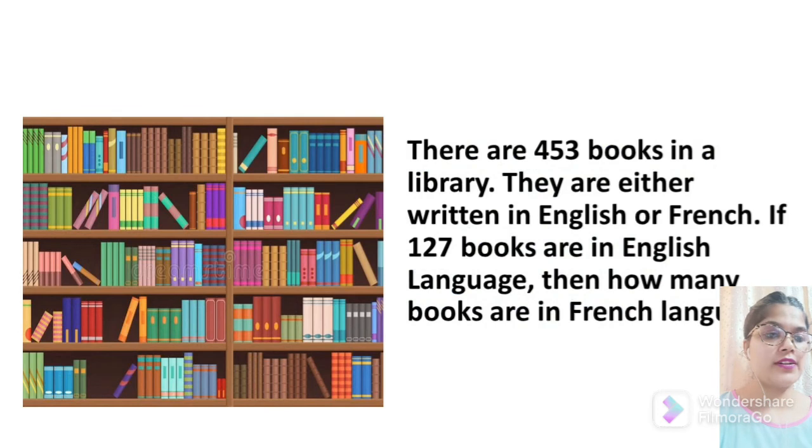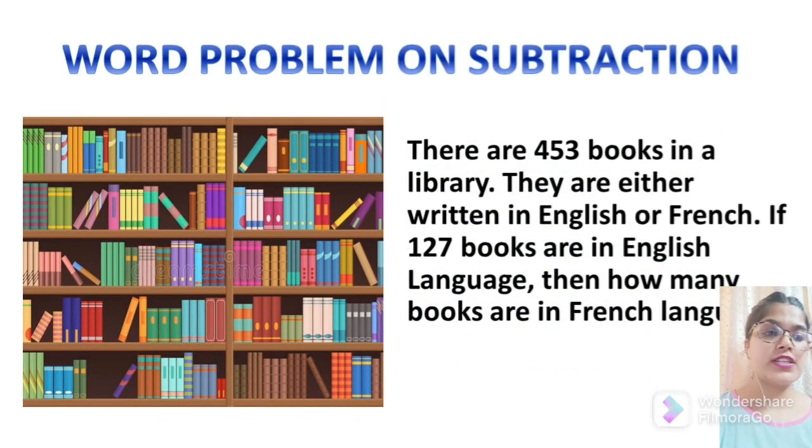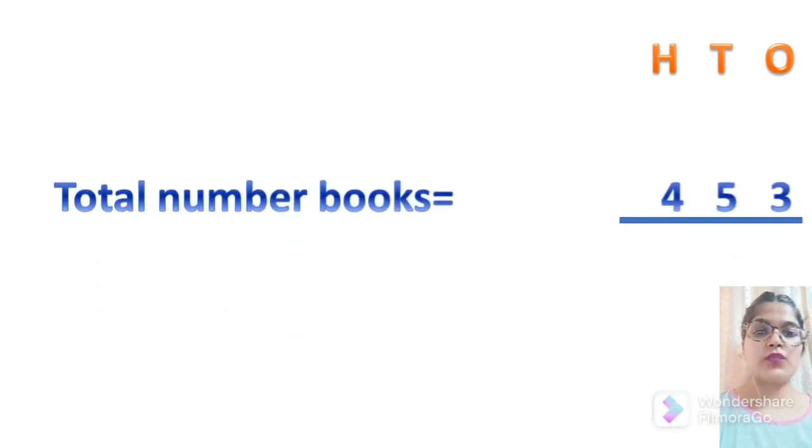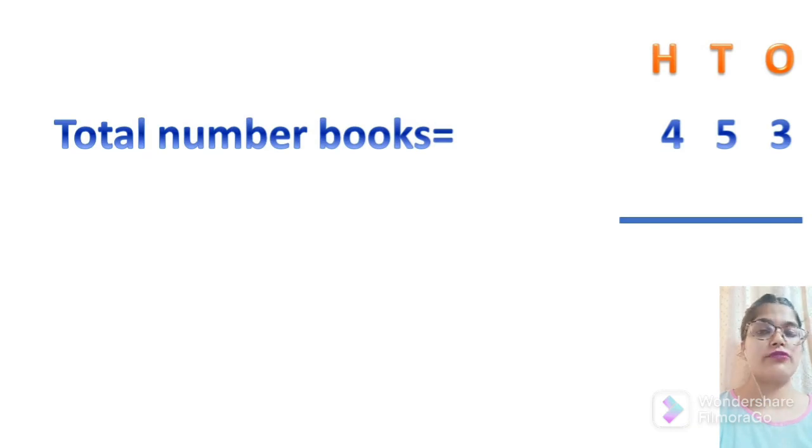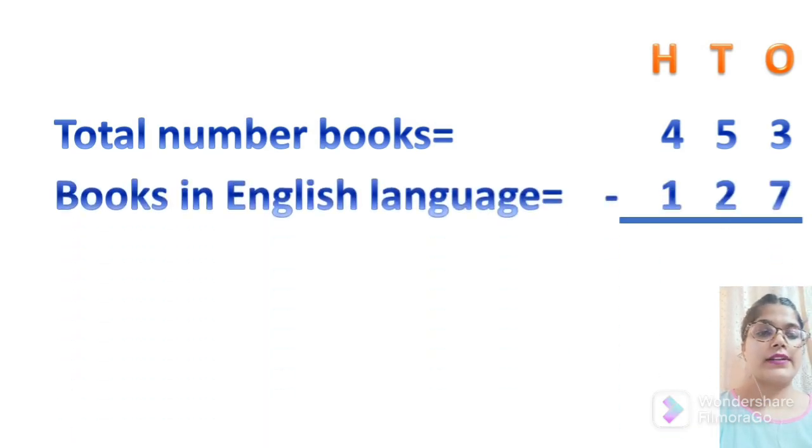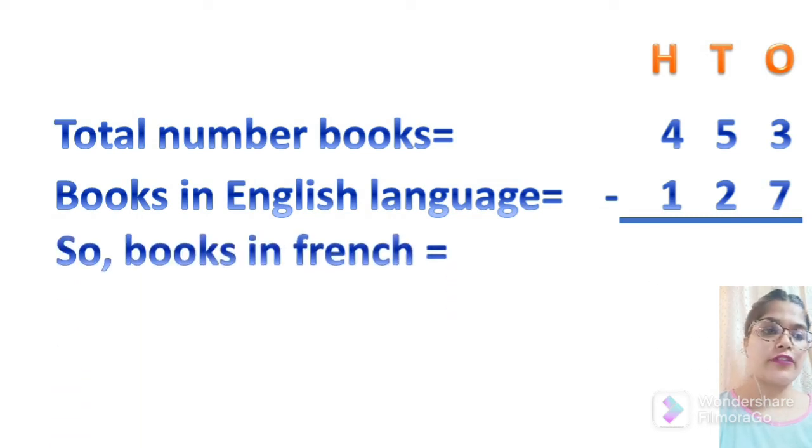Now, we have a situation here. There are 453 books in our library. They are either in English or in French. If 127 are in English, then how many are written in French? It is a word problem. So let us give heading ones, tens and hundreds first. And then we will start with first statement total number of books which are 453. And then we will write books written in English language which are 127. So as you know, books are written either in English or in French. So after finding the difference, we can easily find the number of books written in French.